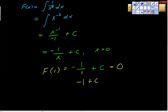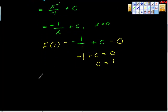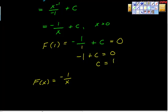Substituting x = 1, we get negative 1 plus C equals 0. With just a little bit of algebra, we get C is equal to 1. Now we have a very specific equation: f(x) = negative 1 over x plus 1. For this particular solution, given the point (1, 0) that they gave us, we know the C value had to be 1. So here's our equation.